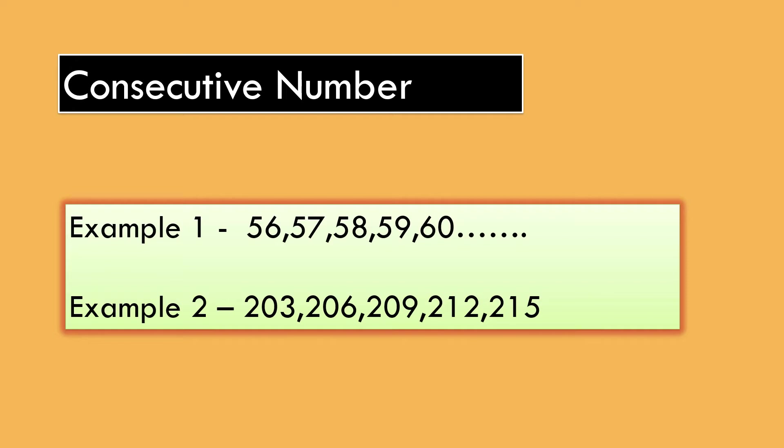In example 2, numbers 203, 206, 209, 212, 215 and so on are in fixed order, having a difference of 3 between them.